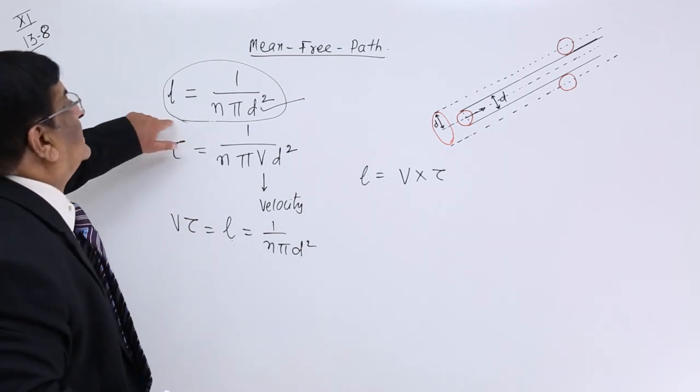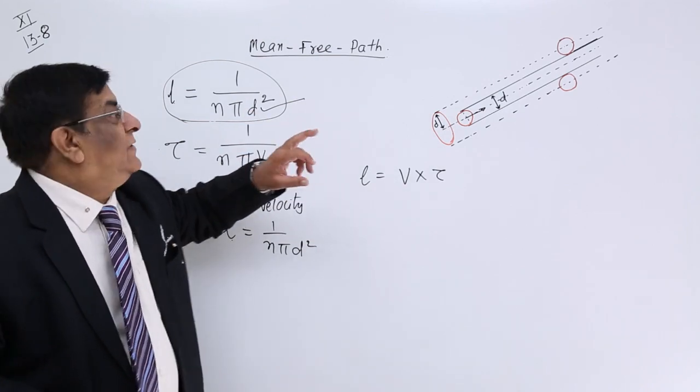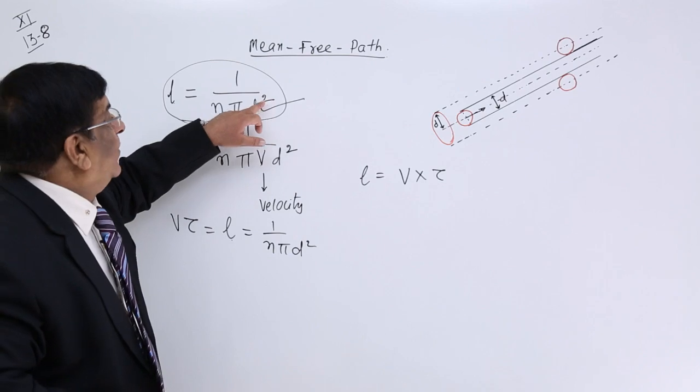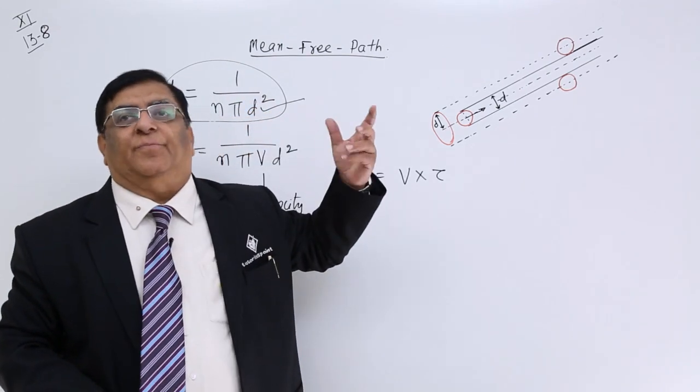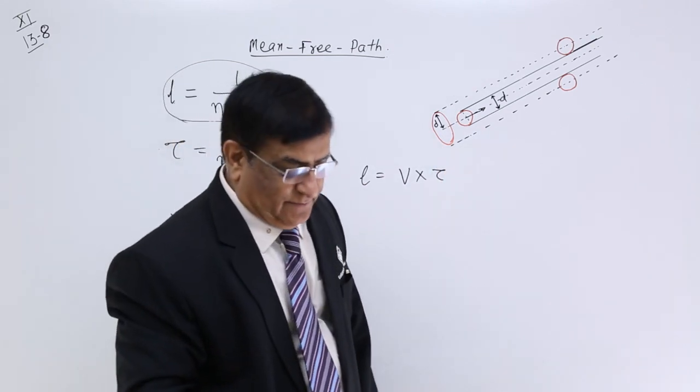So this is known as mean free path. For larger molecules mean free path will decrease a lot because there is a square and for smaller molecules free path is very large. So this is the concept of free path. Thank you.